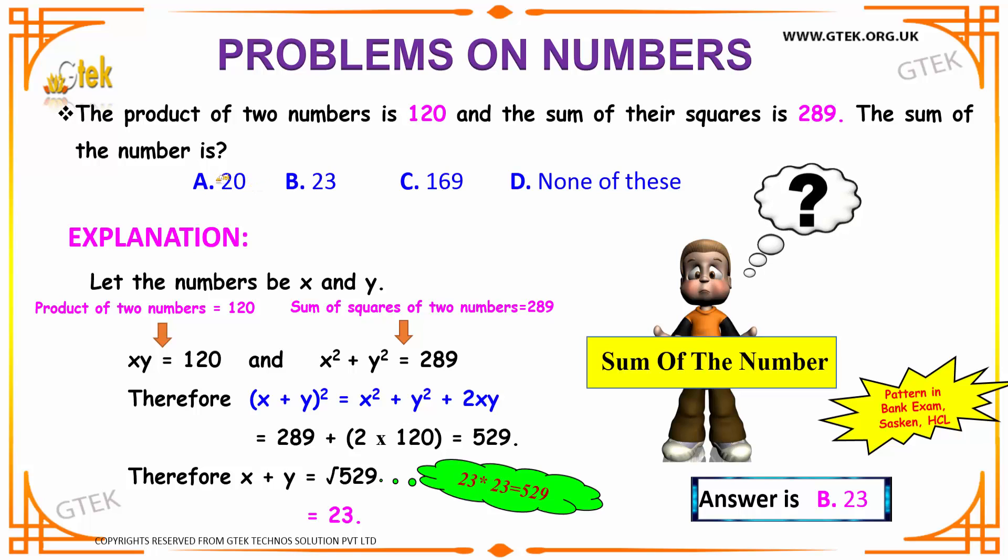Let us see the options. Option A, 20. Option B, 23. Option C, 169. And option D, none of these.